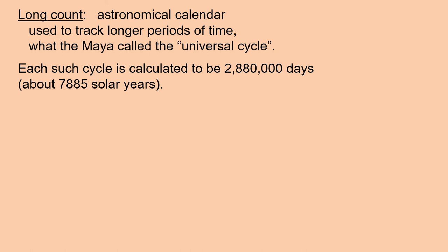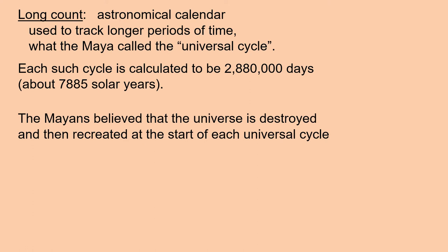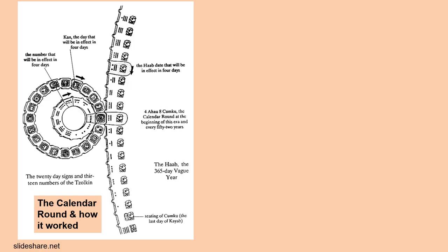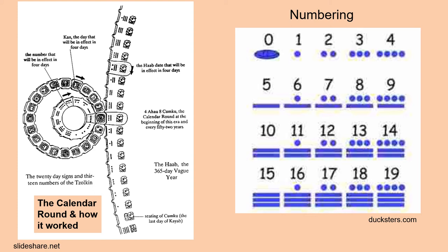The long count was an astronomical calendar used to track longer periods of time — what the Maya called the universal cycle. Each such cycle is calculated to be 2,880,000 days, or about 7,885 solar years. The Mayans believed that the universe is destroyed and then recreated at the start of each universal cycle. The numbering system uses bars to represent five and dots to represent one.